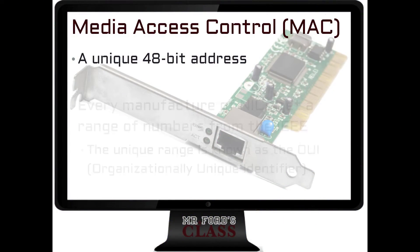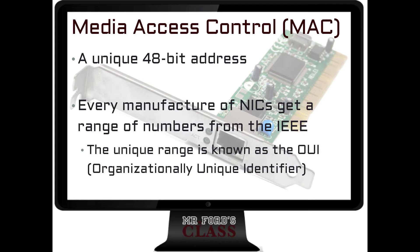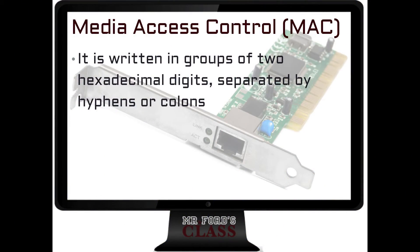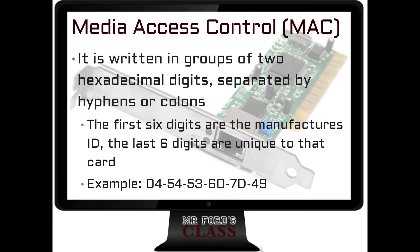The MAC address is a unique 48-bit address. Every manufacturer of NICs gets a range of numbers from the IEEE. That unique range is known as the OUI, or Organizational Unique Identifier, which lets us track back who sent the data since the MAC address is sealed on the device. It is possible to spoof a MAC address, though it's harder than spoofing an IP address, which we'll cover in the next video. The MAC address is written in groups of two hexadecimal digits separated by hyphens or colons. The first six digits are the manufacturer's ID, and the last six digits are unique to that specific card.